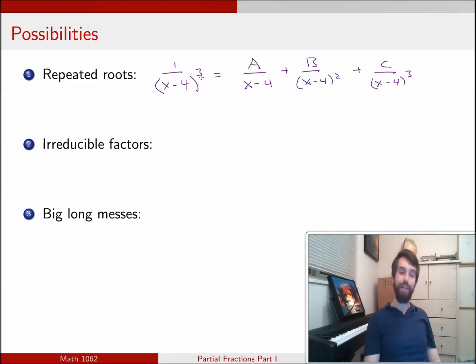This is just going to ensure that the algebra works out nicely. So if you have n factors on the bottom, you need to have n terms, the powers of which are the x minus 4 to the power of 1, then to the power of 2, then to the power of 3, and so on down the line.